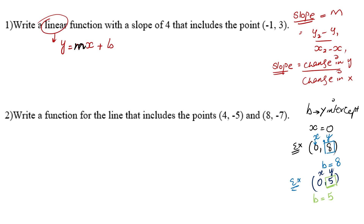Now the actual question says: write a linear function with a slope of 4. Slope means m, so m is given to us as 4. Now, in order to find b, you put the values of y, x, and m into the equation.